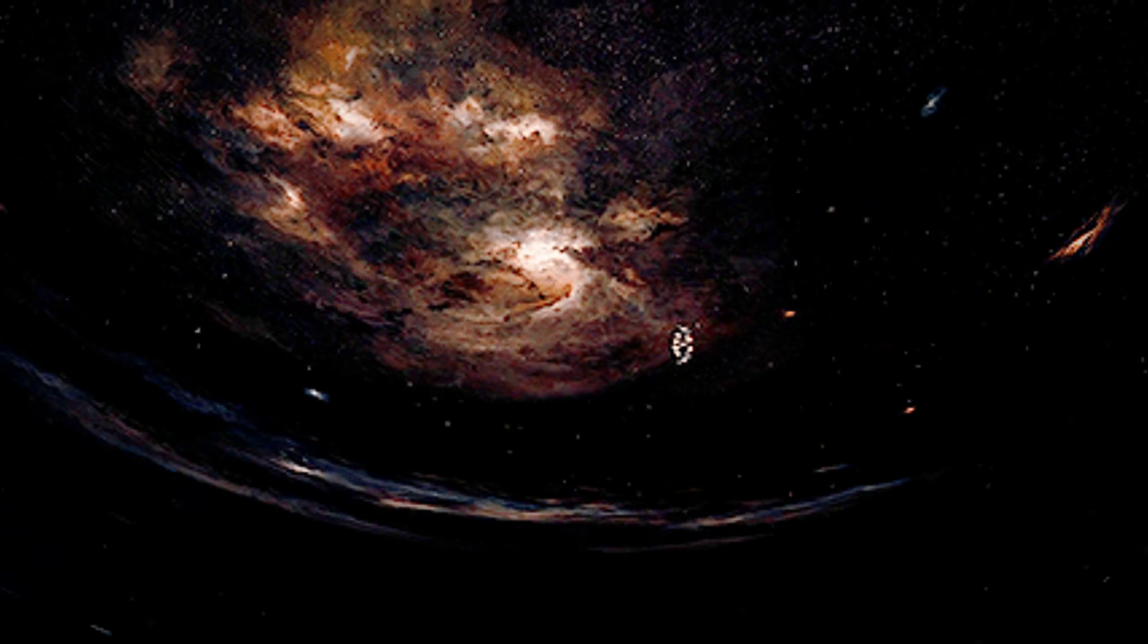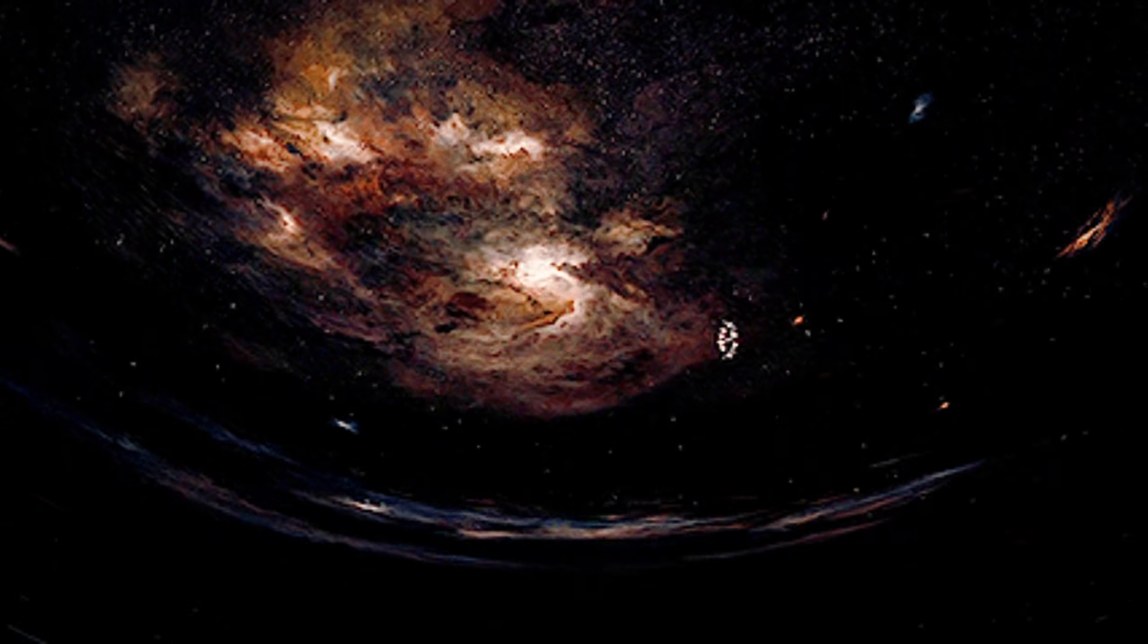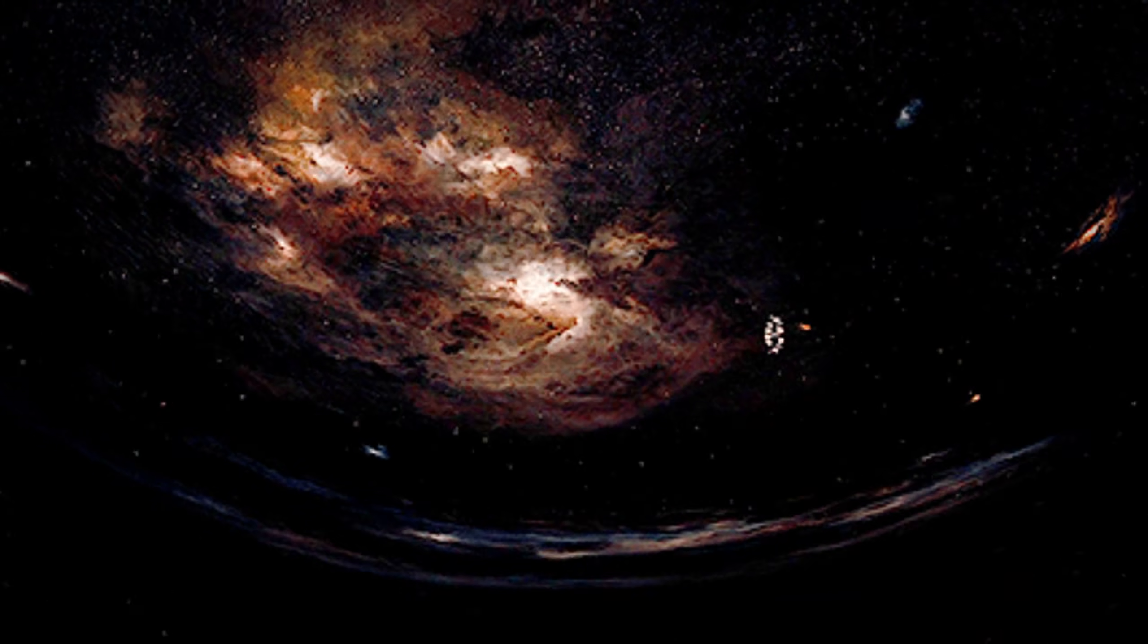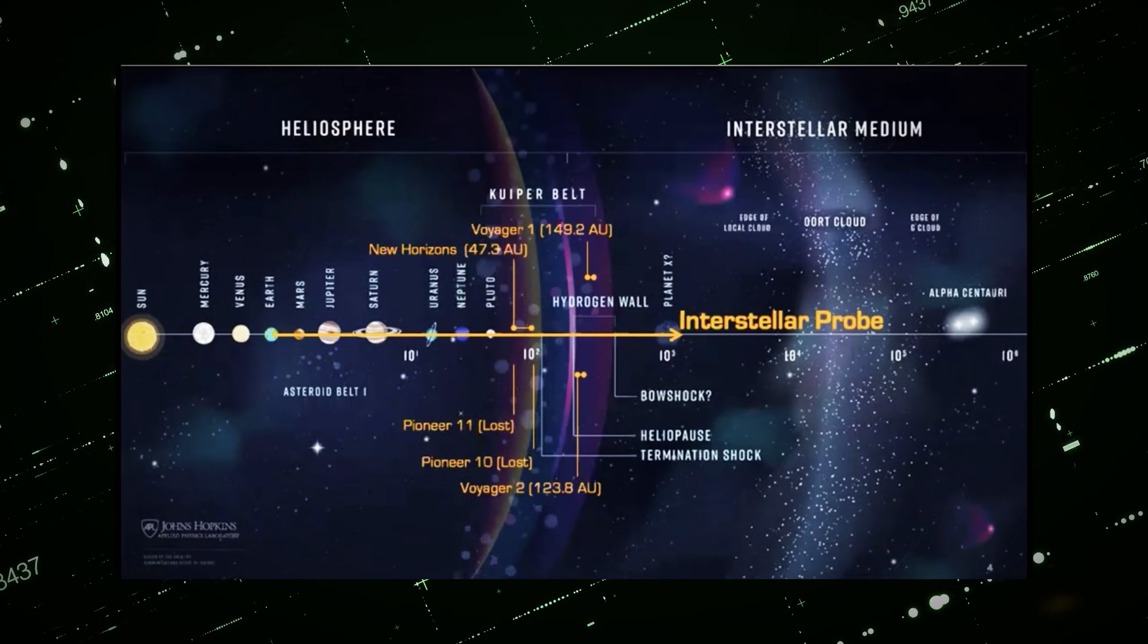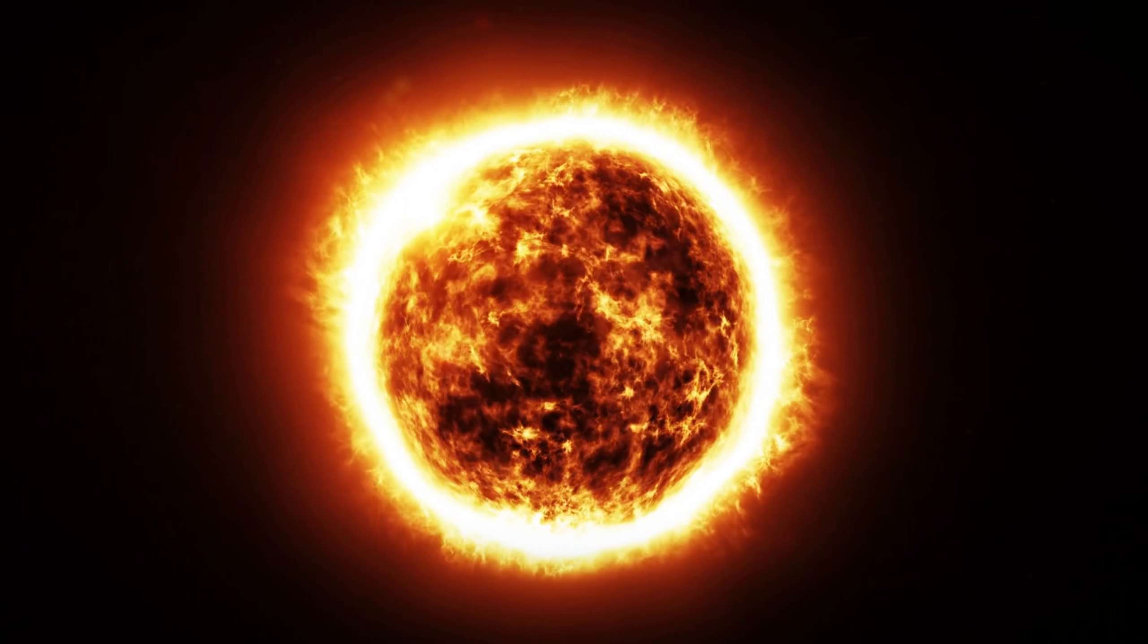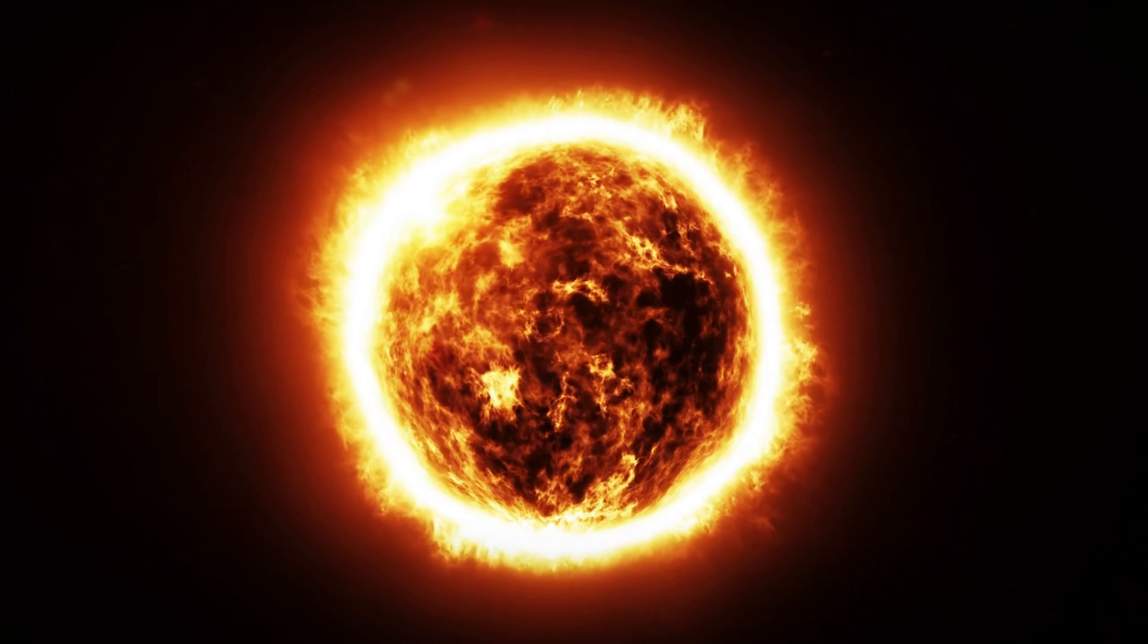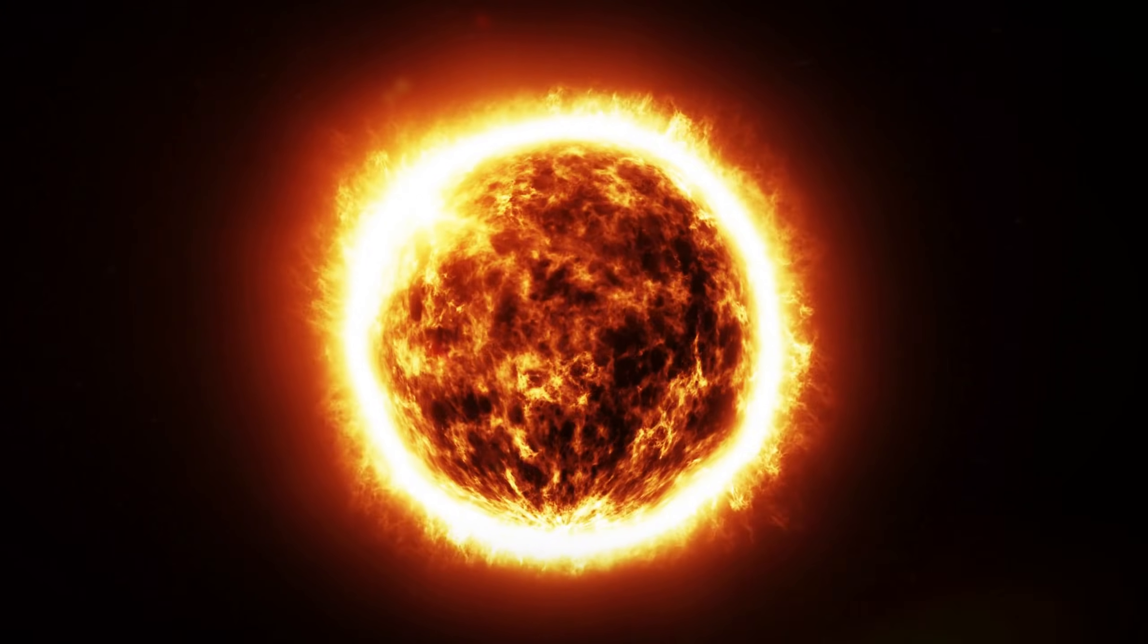Eventually, it encounters the interstellar medium, a region filled with remnants of ancient stellar explosions. Like oil and water, the solar wind and interstellar medium interact in distinctive ways. These two forces don't easily mix, creating a boundary known as the heliosphere. This immense bubble, powered by the solar wind, extends about 11 billion miles from the Sun, enclosing the Sun, all eight planets, and much of the solar system's outer regions.